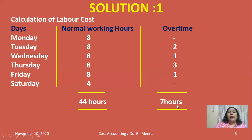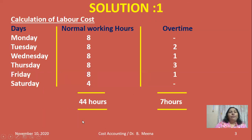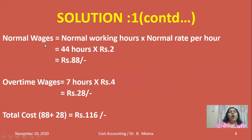Adding all overtime hours for the week: 0 + 2 + 1 + 3 + 1 + 0 = 7 hours extra. Overtime wages = 7 hours × double the usual rate = 7 × 4 rupees = 28 rupees. So, normal time wages = 44 × 2 = 88 rupees, overtime wages = 7 × 4 = 28 rupees, and total labor cost = 88 + 28 = 116 rupees.